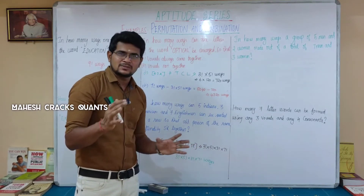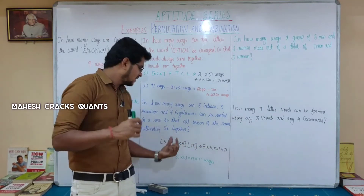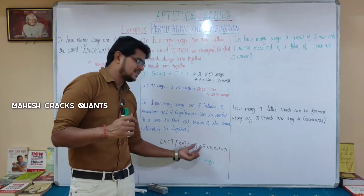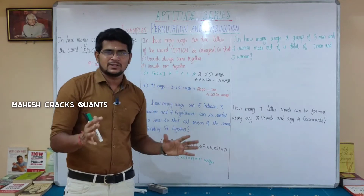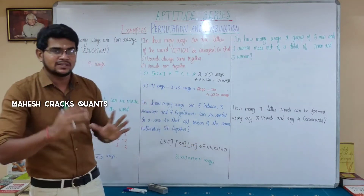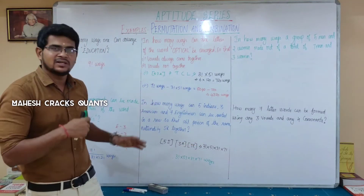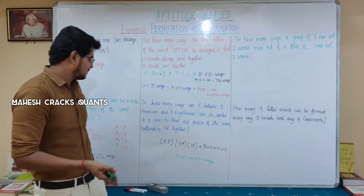If you have three sets, you can arrange those sets among themselves. So the 3 groups can also be arranged in 3-factorial ways. Next question.